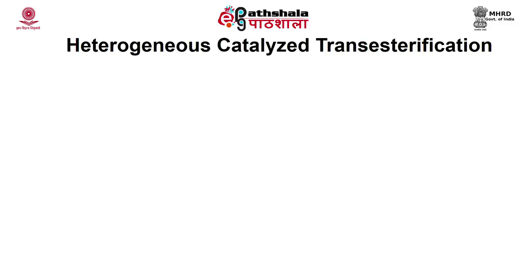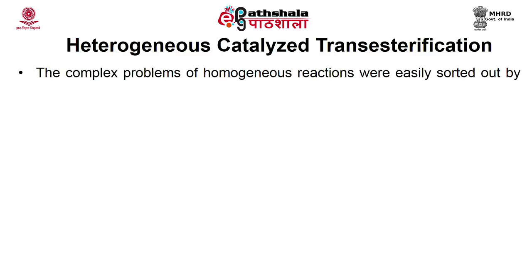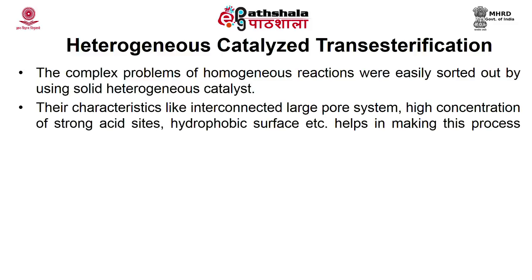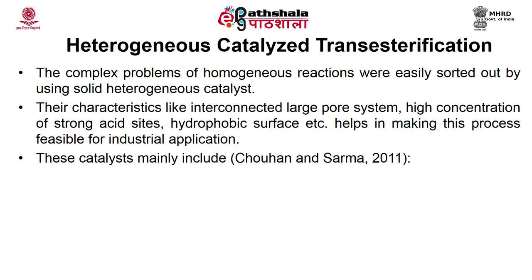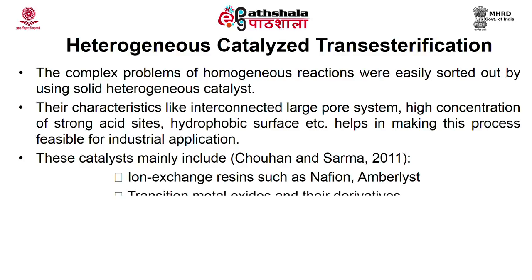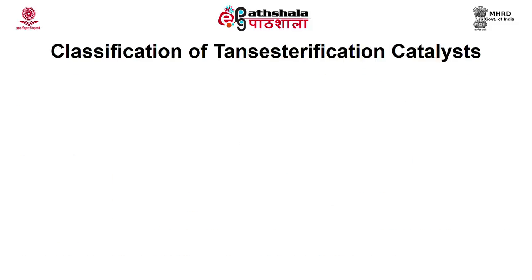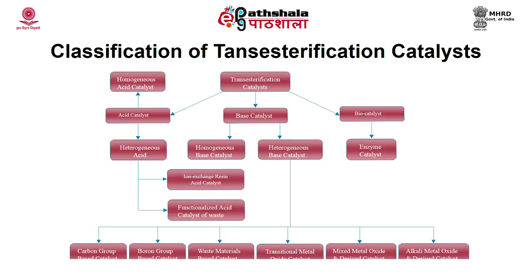The next type is heterogeneous catalyzed transesterification. The complex problems of homogeneous reactions are resolved using solid heterogeneous catalysts, whose characteristics — like interconnected large pore systems, high concentration of strong acid sites, and hydrophobic surface — make the process feasible for industrial application. These catalysts include ion exchange resins, transition metal oxides and their derivatives, boron group-based catalysts, alkaline earth metal oxide derivatives, carbon-based catalysts, and mixed metal oxides. A flow chart illustrates the classification of transesterification catalysts.